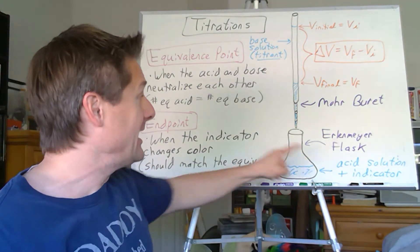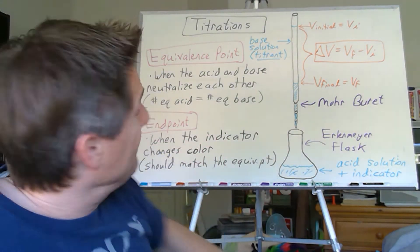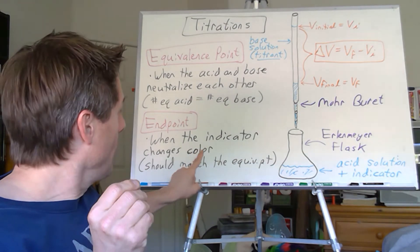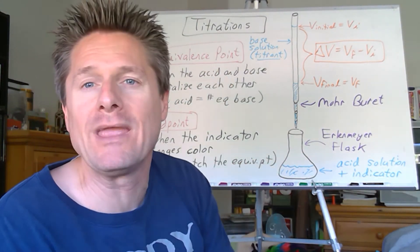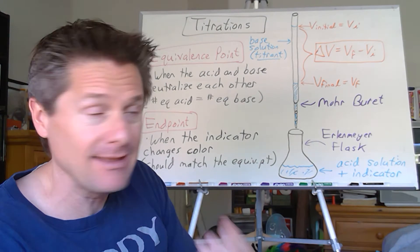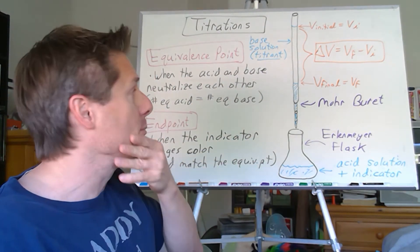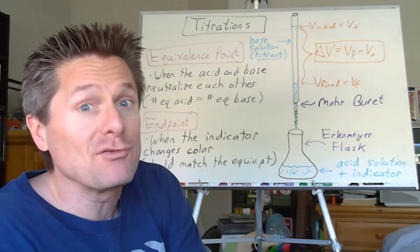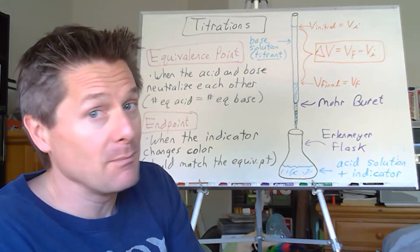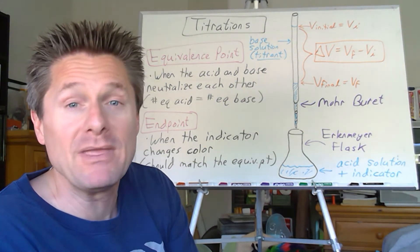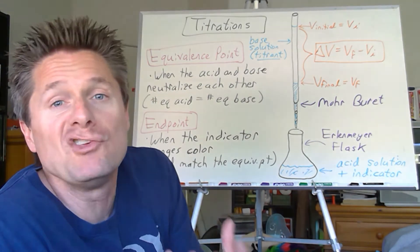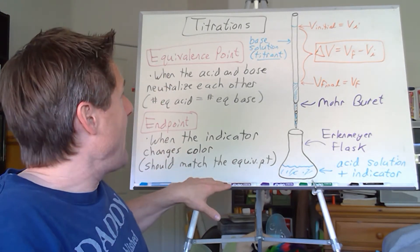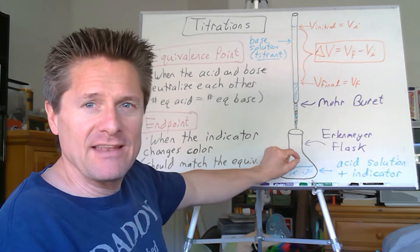But we can add an indicator that changes color at that point. So the indicator chosen must have its color change, its endpoint, trigger when the equivalence point is reached. We can't see it, but we can see the color change, the endpoint. We tend to use phenolphthalein because it goes from colorless in acid solution to pink in basic. So it's always easiest for our pathetic human eyeballs to see a colorless to a color rather than a color to another color.